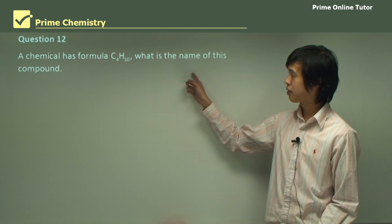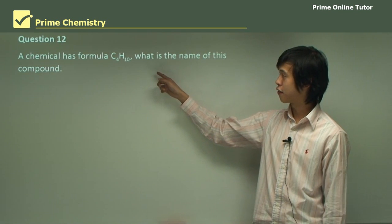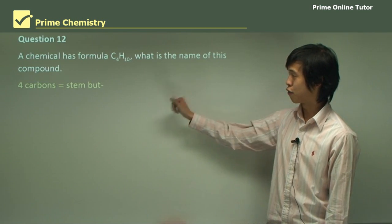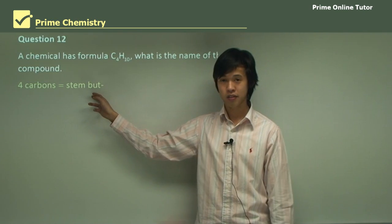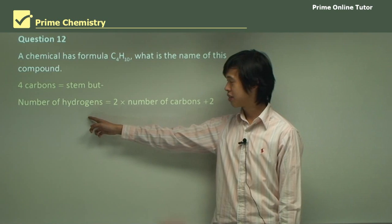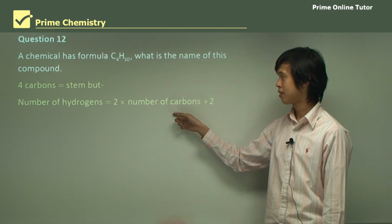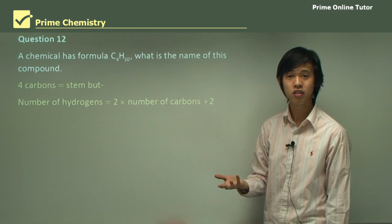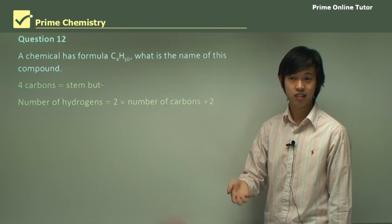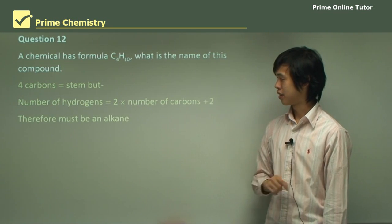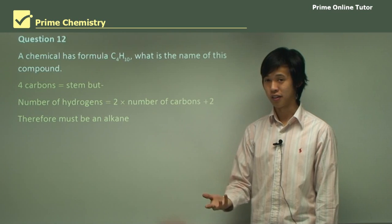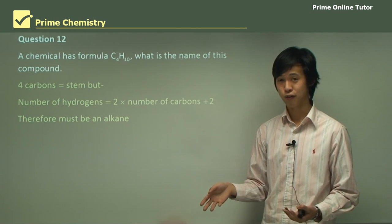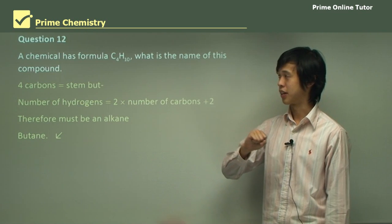A chemical has formula C4H10. What is the name of this compound? Four carbons, the stem is butane, or but. The number of hydrogens is 2 times the number of carbons, plus 2. So 10 is 2 times 4, plus 2. 2 times 4 is 8, plus 2 is 10. That must be an alkane because it follows that 2n plus 2 formula. The answer must be butane.